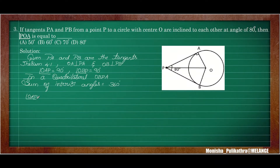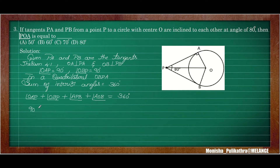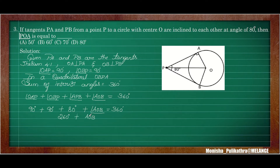The interior angles are: OAP plus OBP plus APB plus AOB equals 360 degrees. By theorem 4.1, OAP and OBP are each 90 degrees. The APB value is already given as 80 degrees. So 90 plus 90 is 180, and 180 plus 80 is 260 degrees. Therefore 260 degrees plus AOB equals 360, so AOB angle equals 360 minus 260, which gives us 100 degrees. But they asked for angle POA, not AOB.